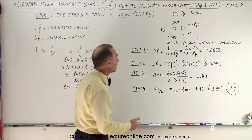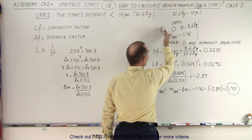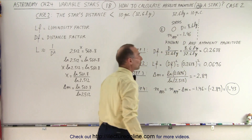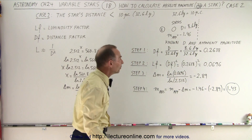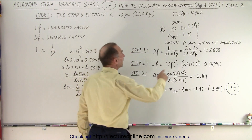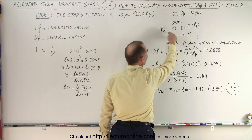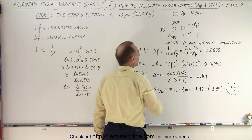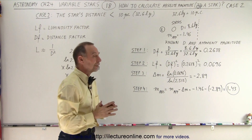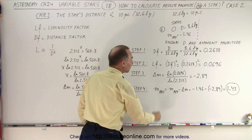In this case we're going to take Sirius, which we know is closer to us than 10 parsecs. We know the distance is 8.6 light years and we know that the apparent magnitude is equal to minus 1.46, written as m-sub-app for apparent magnitude. We're going to try to figure out the absolute magnitude.